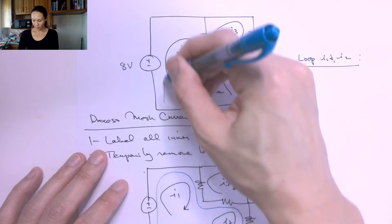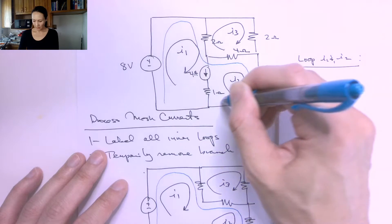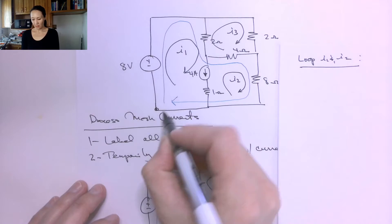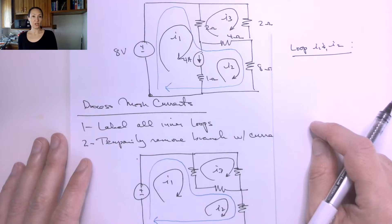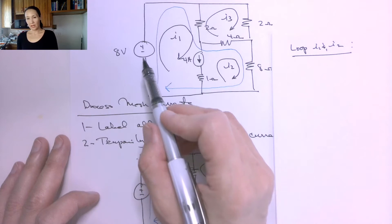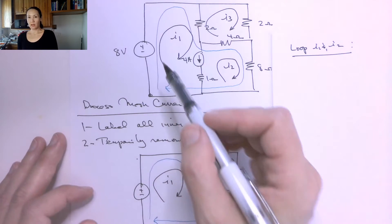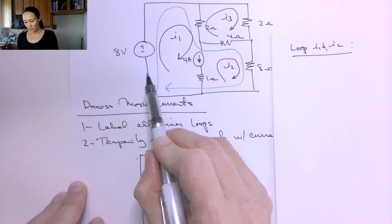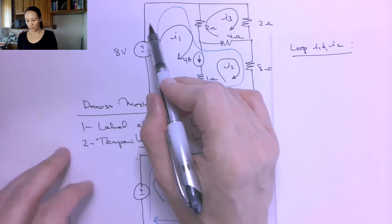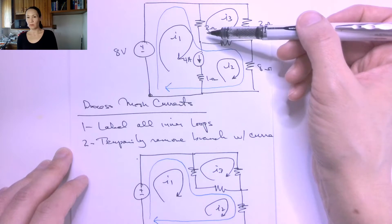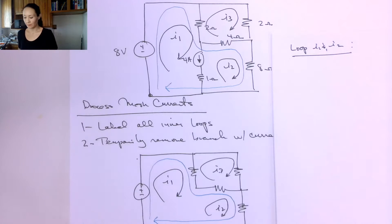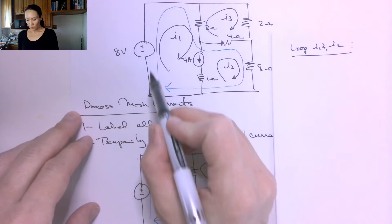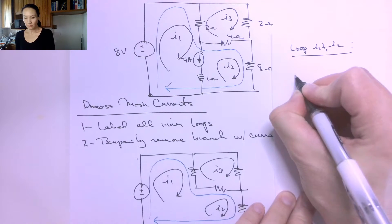If I go around my new blue loop — because I temporarily removed that branch that contains the current source — the first thing I encounter starting here and going up around is this 8-volt voltage source. Using the passive sign convention, if we enter a circuit element through the negative terminal, we make that a negative voltage. So when we enter this 8-volt source, this is going to be negative 8 volts.